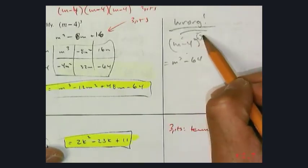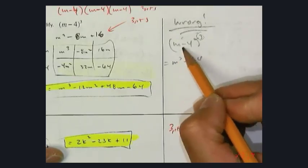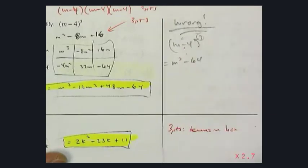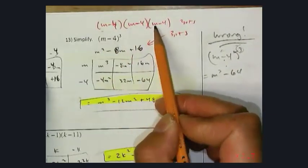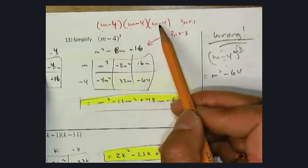Because this is not a power rule. Power rule refers to exponents, and with inside here, these are not exponents. Exponents refer to multiplication. I have an addition and subtraction. These are called factors. So, if you wrote out (m - 4) three times, I give you two points. At least you understand that it's three binomials.